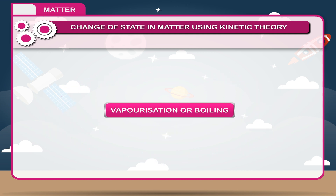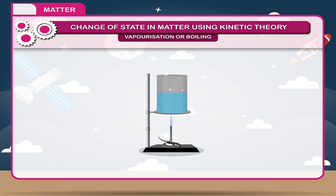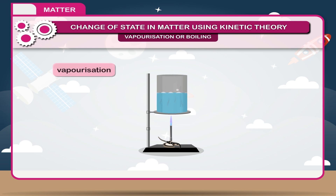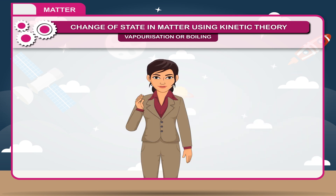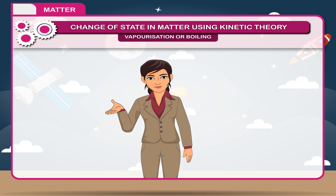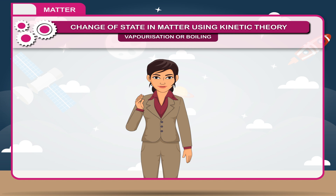Vaporization or boiling. The change from liquid to gas phase on heating at a constant temperature is called vaporization. The particular temperature at which vaporization occurs is called the boiling point of the liquid.